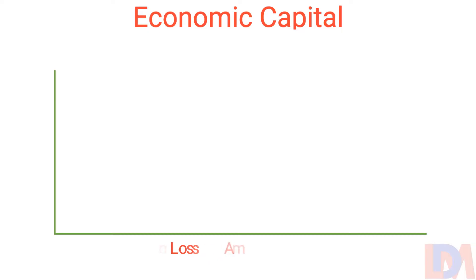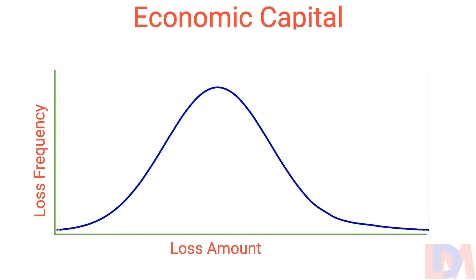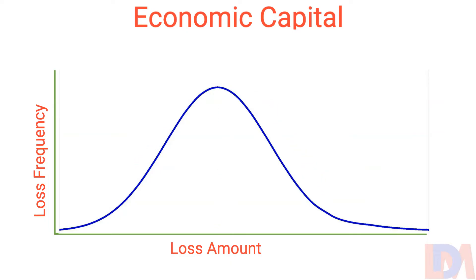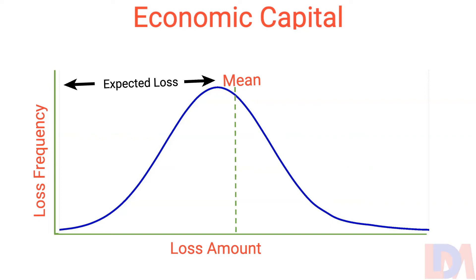It has been proven that the frequency of loss in banks and financial institutions follows a log-normal distribution — that is, the logarithm of the loss value is normally distributed. The log-normal distribution is skewed to the right; the distribution frequency increases to its mode and decreases thereafter. Banks and financial institutions compute expected loss, which is the average or mean point of the distribution, and such loss is provided for in the books of accounts by way of provision for expected loss.